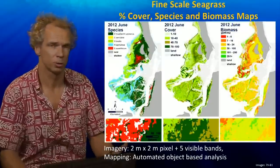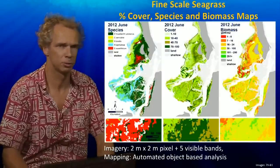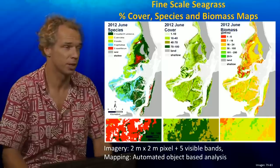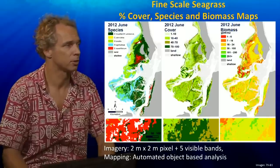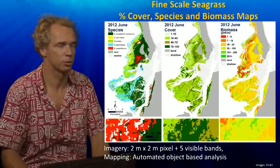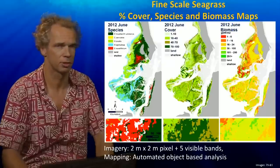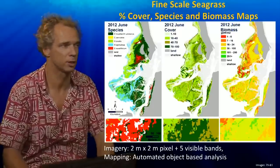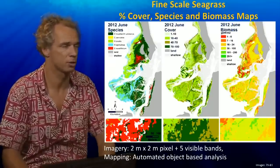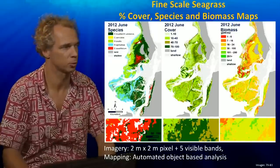Recently, new methods have emerged using higher resolution images with 2 by 2 meter pixel size and automated object-based approaches. These allow us to obtain not only seagrass cover but also seagrass species composition, as shown on the left, seagrass cover in the middle, and biomass derived from it as well. On the bottom you can see the level of detail this provides over a small area.